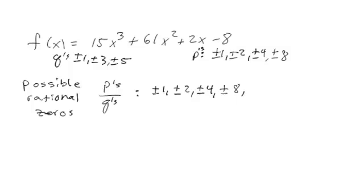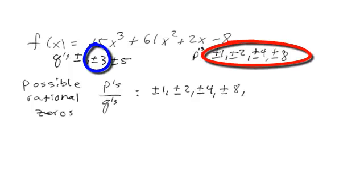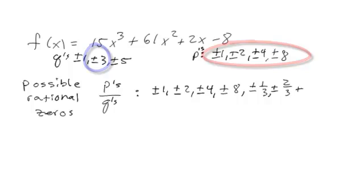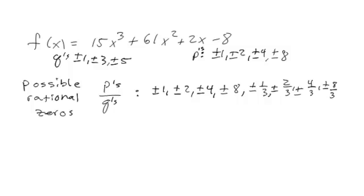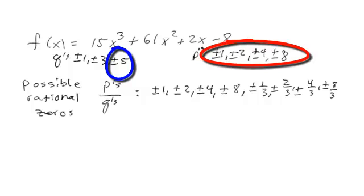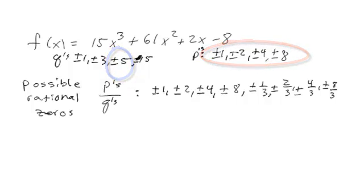Now we need to divide all of the P's by the plus or minus 3. So we get plus or minus 1 third, plus or minus 2 thirds, plus or minus 4 thirds, and then plus or minus 8 thirds. Now we need to divide all of the P's by the 5. Oh, I forgot one here, 15. Add that in there, plus or minus 15.